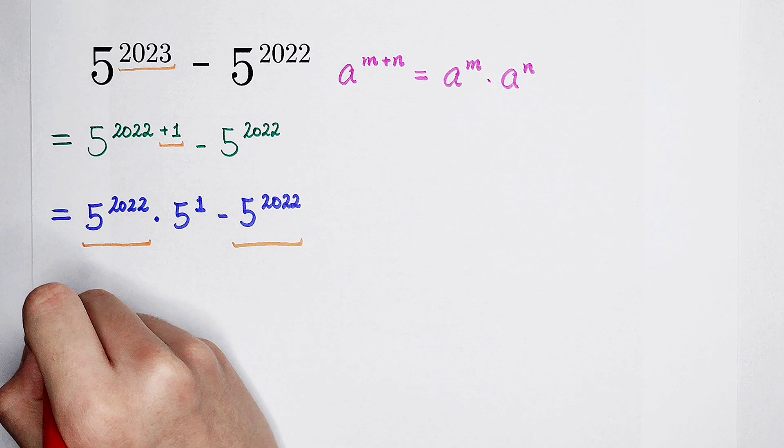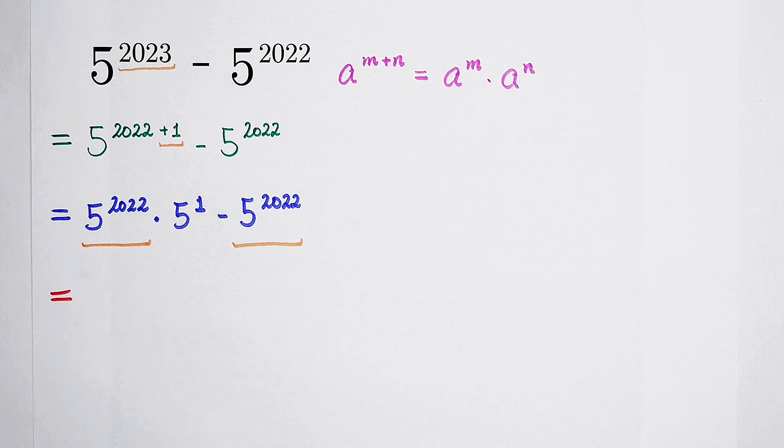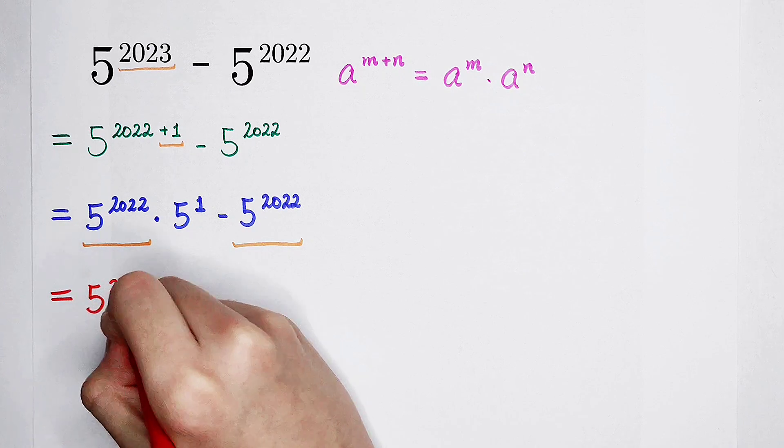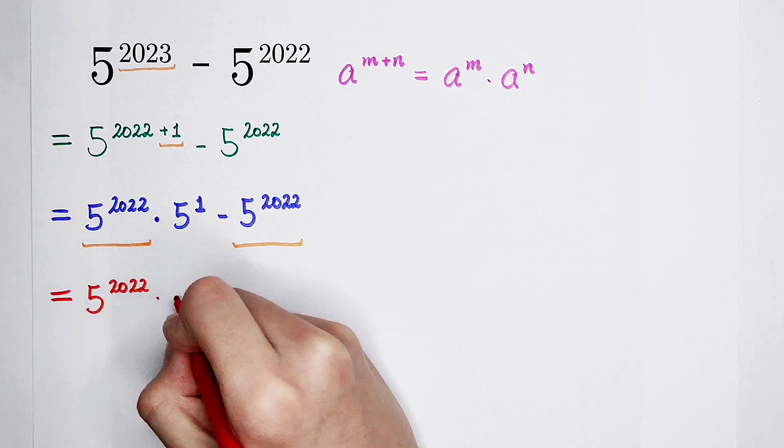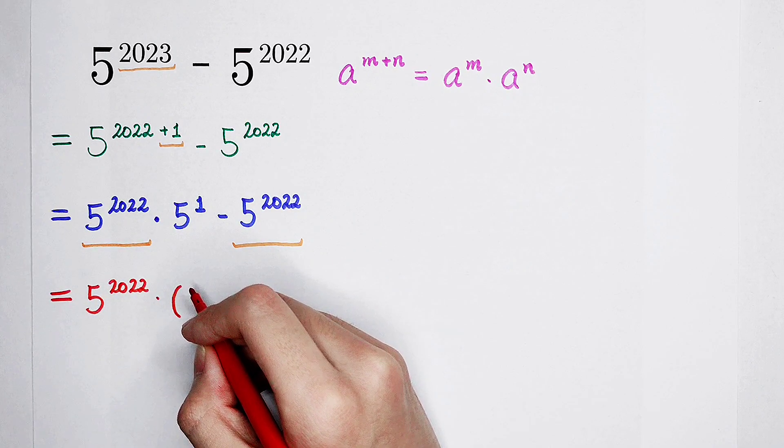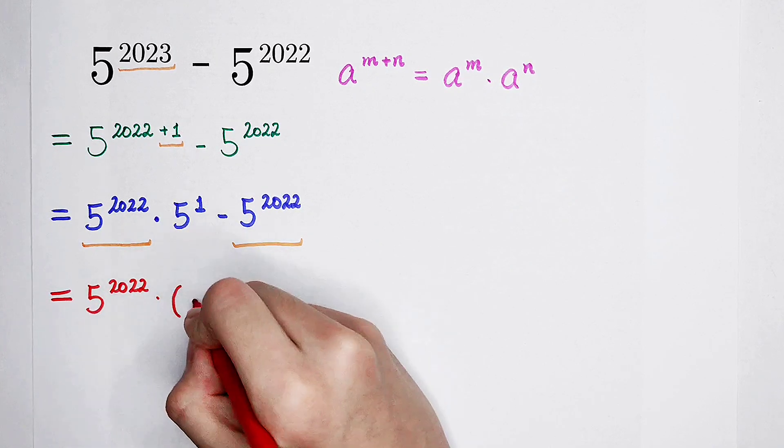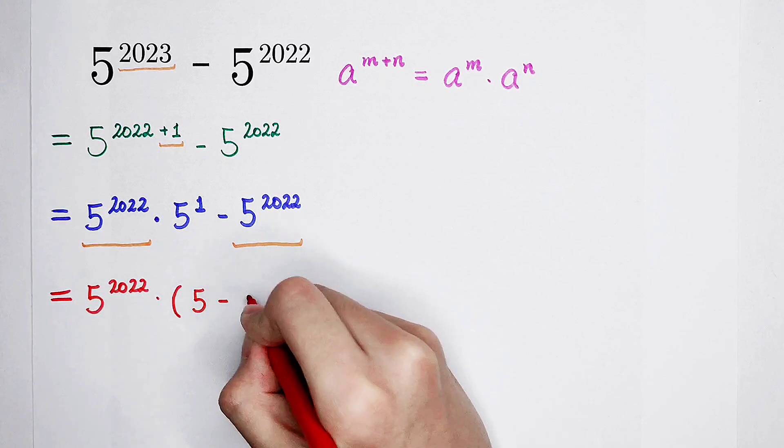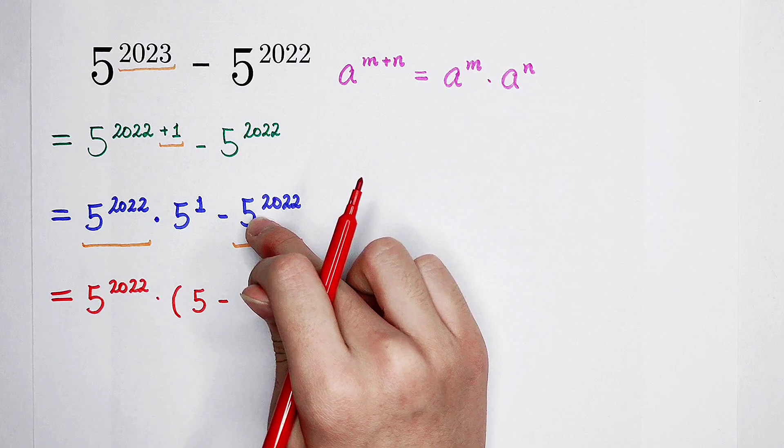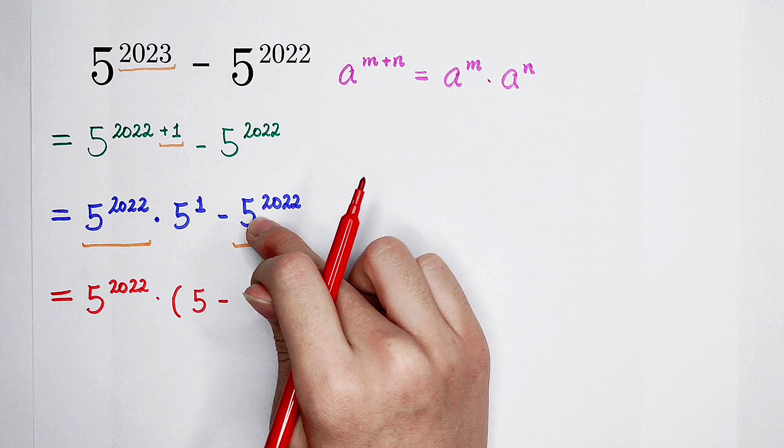So then, don't worry. It is also equal to, take it out, 5 to the power of 2022, and then times 5 to the power of 1, and the number times 1 is equal to itself. So it is 5, and then minus, here, pay attention. We have taken out a 5 to the power of 2022.